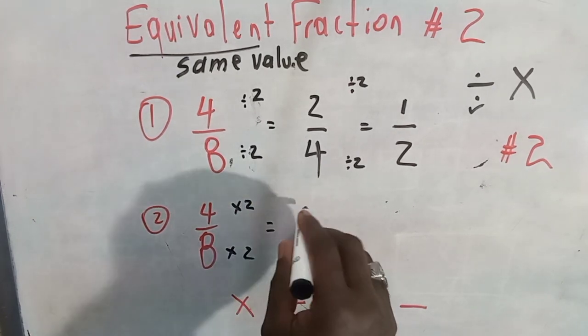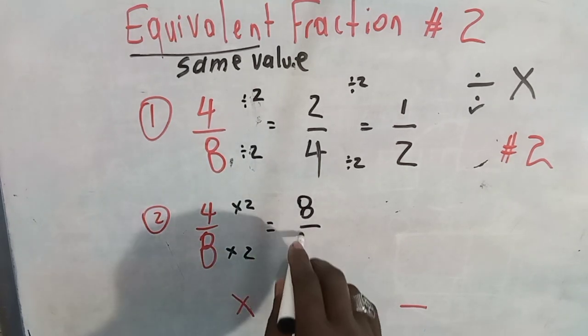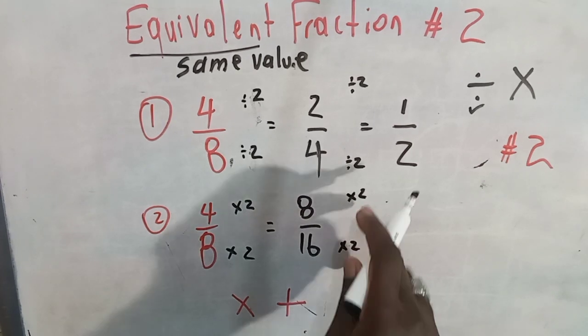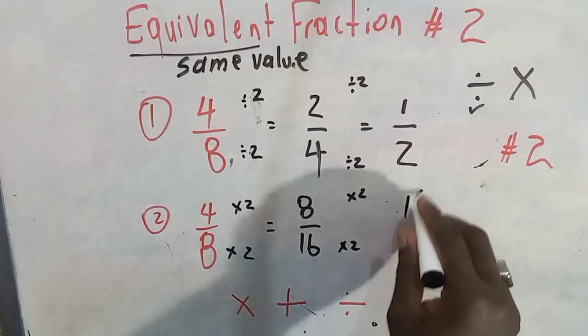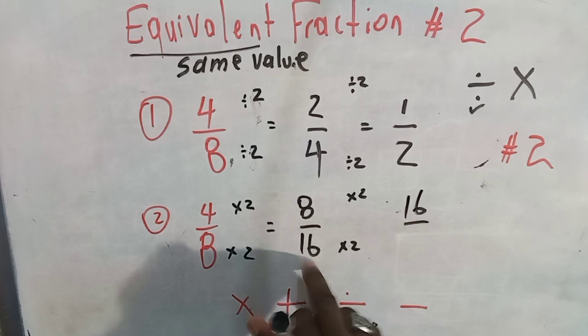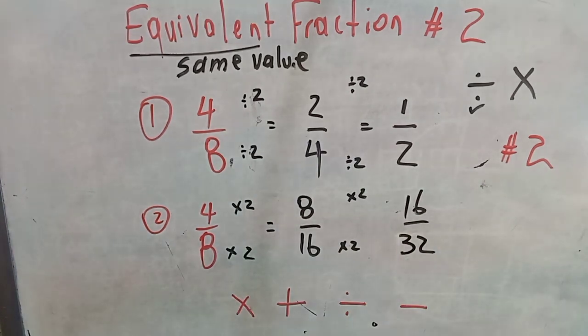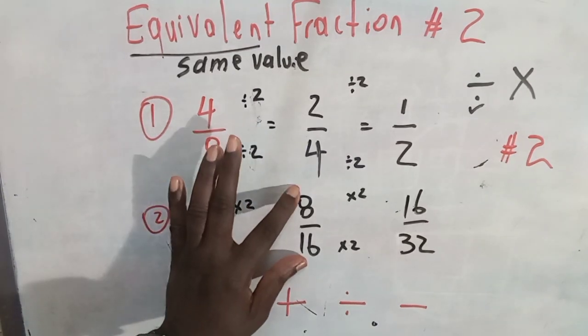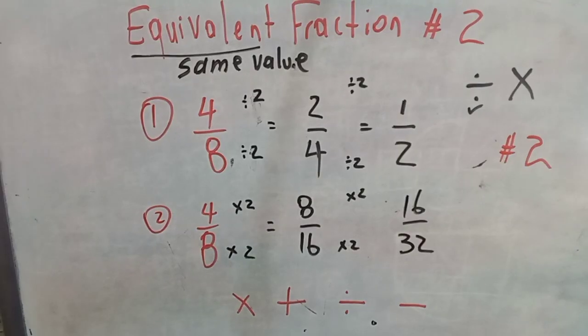Two times four is eight. Two times eight is 16. Let's go with two again. Two times eight is 16. Two times 16 is 32. And we could go on and on until infinity. So 4/8, 8/16, and 16/32 are the same.